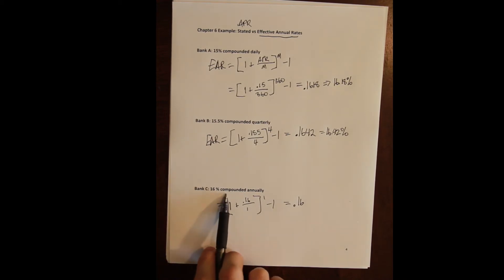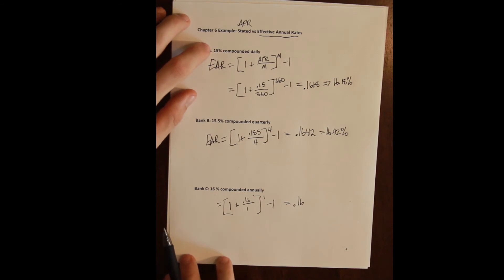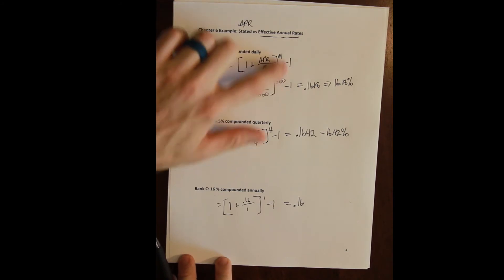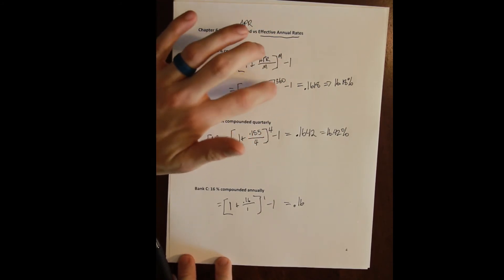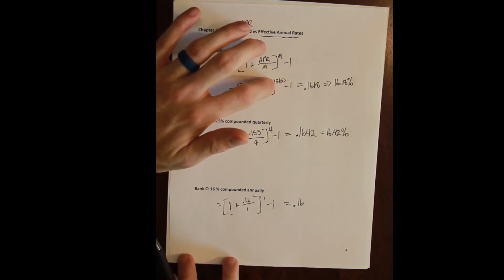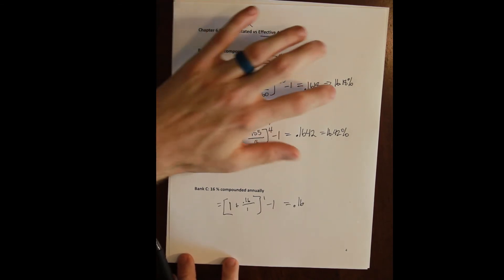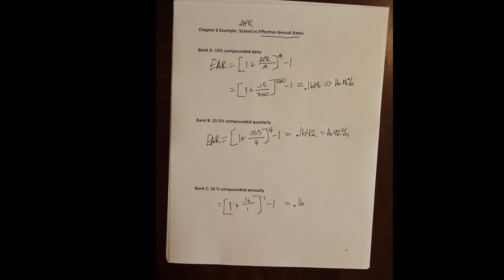This is illustrative of why we need the effective annual rate. On the face of it, in class normally I get an opportunity to ask everybody what they think the lowest one is going to be, and a good majority of students pick this one. Why wouldn't we? 15% is lower than 16% and the effective daily compounding—we can't do this kind of mental math in our head. Without checking, we can't be sure.